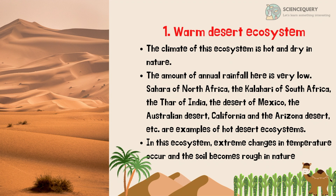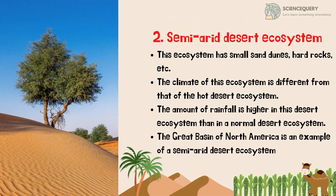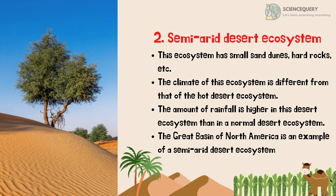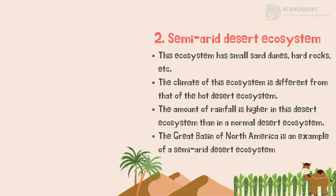In this ecosystem, extreme changes in temperature occur and the soil becomes rough in nature. The second type of desert ecosystem is the semi-arid desert ecosystem. This ecosystem has small sand dunes, hard rocks, etc. The climate of this ecosystem is different from that of the hot desert ecosystem. The amount of rainfall is higher here than in a normal desert ecosystem. The Great Basin of North America is an example of a semi-arid desert ecosystem.